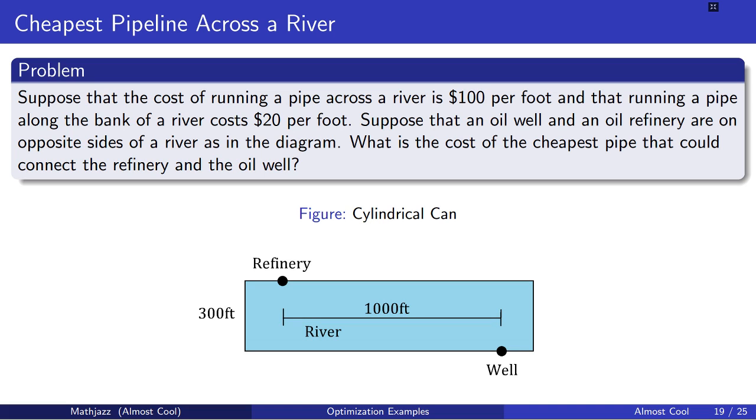Here's the diagram. So we have a horizontal distance of 1,000 feet and a vertical distance of 300 feet. I guess both are technically horizontal distances because the refinery is not on the top of the river or the well is not at the bottom of the river. But on the diagram there, the refinery is 300 feet above the well.